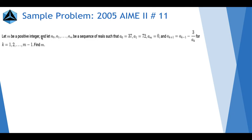Let m be a positive integer and let the sequence a0, a1 to am be a sequence of reals such that a0 equals 37, a1 equals 72, am equals 0, and a sub k plus 1 equals a sub k minus 1 minus 3 over ak for k equals 1, 2 through m minus 1. Find m.